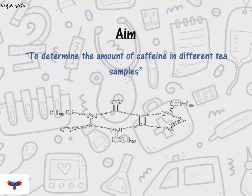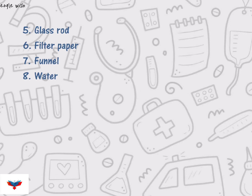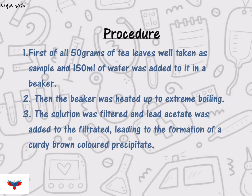After the introduction, write the aim of your project and materials required in the experiment. After mentioning the aim and apparatus, we are going to write the procedure of the experiment.